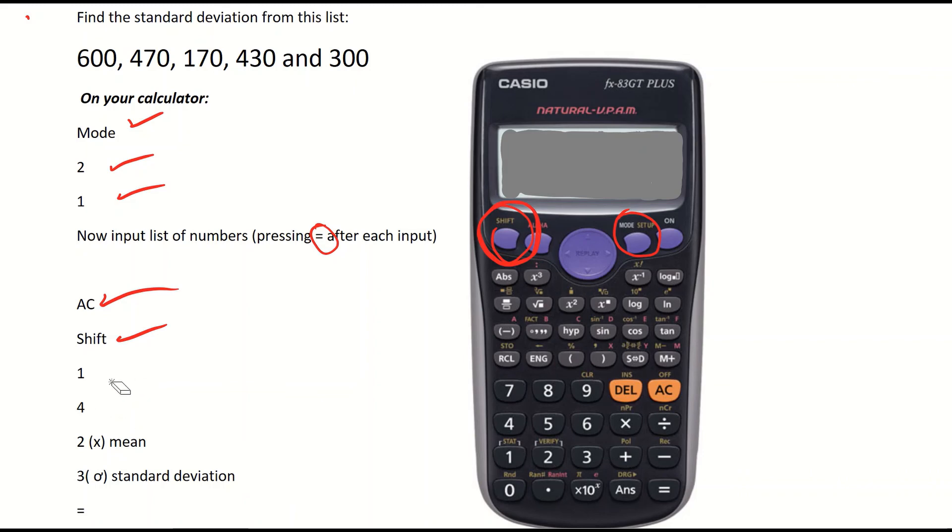when you're trying to find the values of the mean and the standard deviation from your calculator, once you've input the data, you have to click on the shift button, then the 1 and then the 4. You then have two options. Which one do you want to find? Is it the mean you're trying to find or is it the standard deviation you're trying to find? You have to do them separately. So you click 2 for mean or 3 for standard deviation.